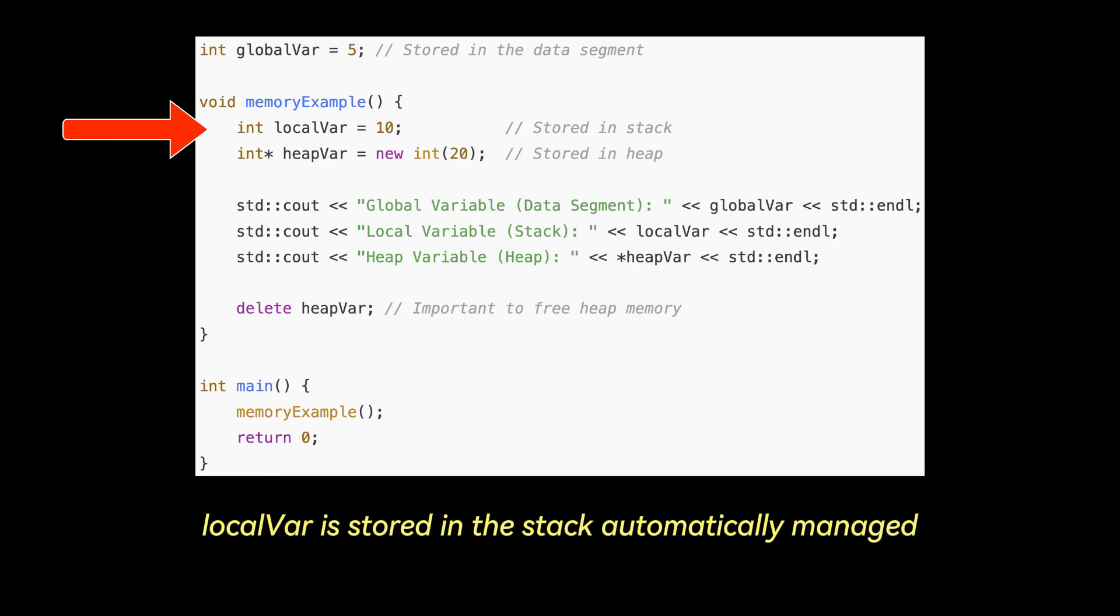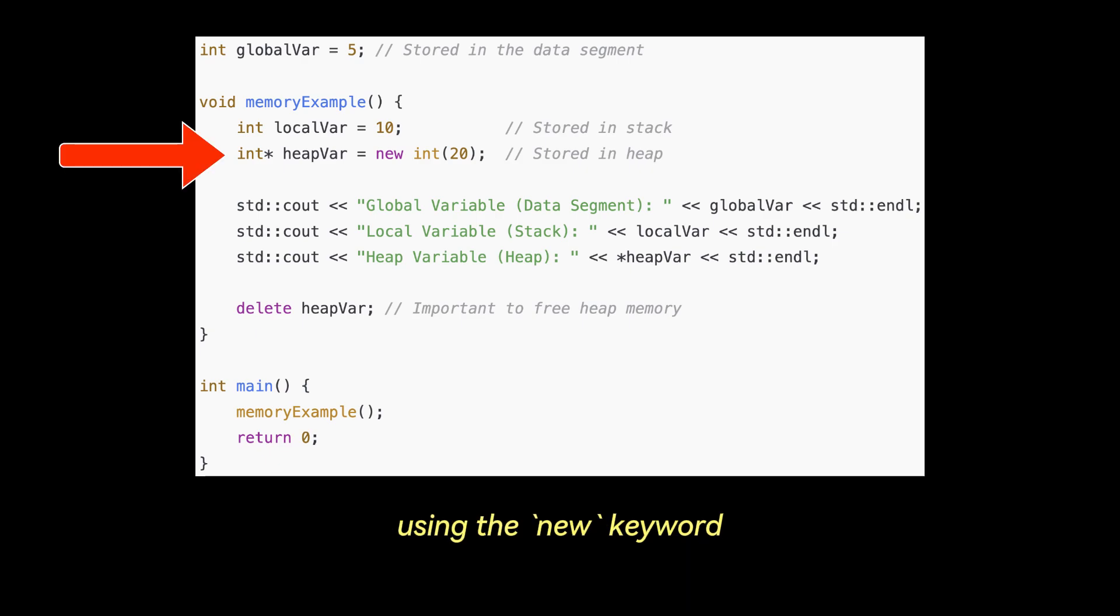Local var is stored in the stack, automatically managed when memory example is called and returns. Heap var points to memory in the heap using the new keyword. We must free this memory with delete to avoid a memory leak.